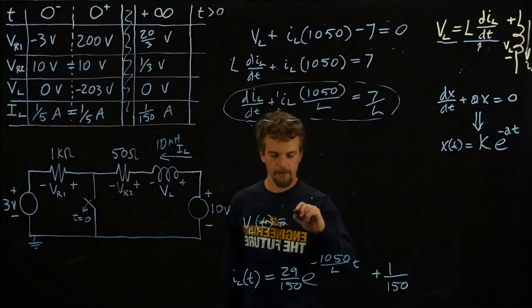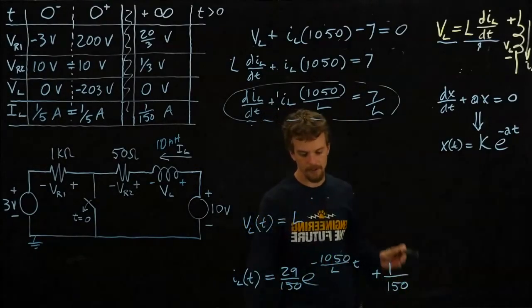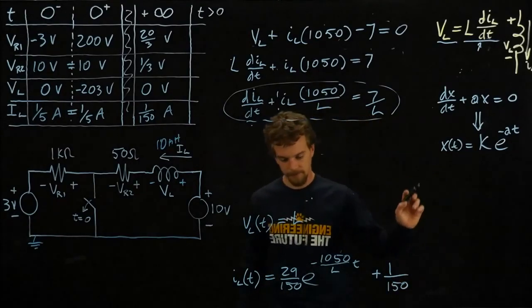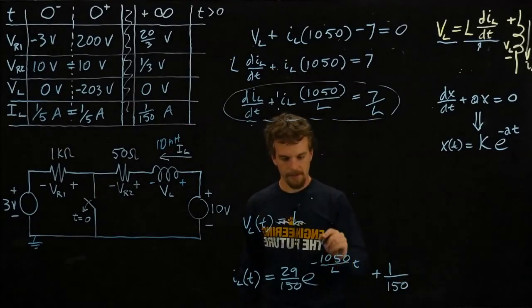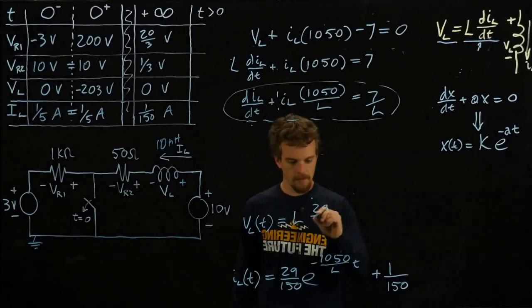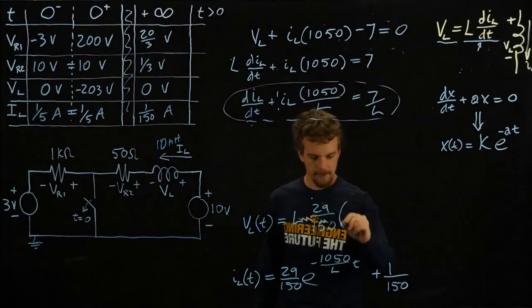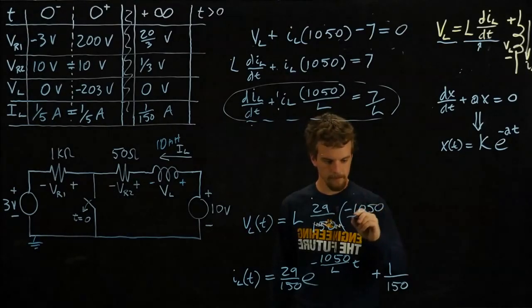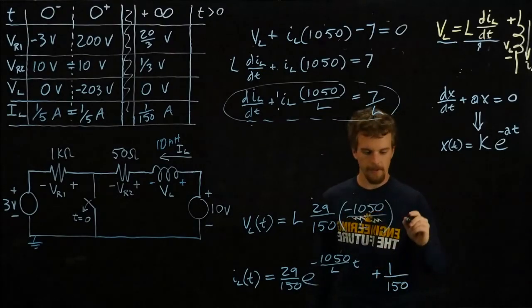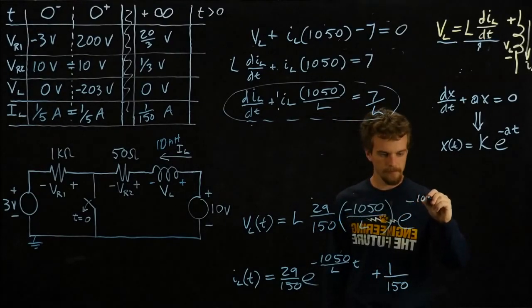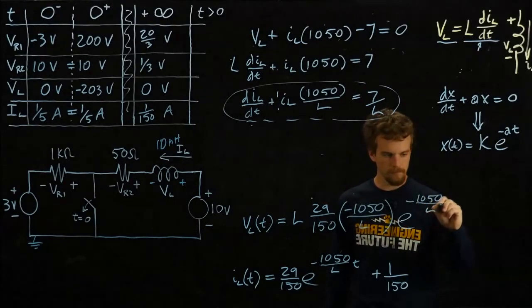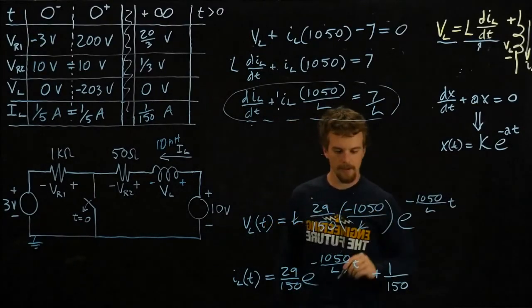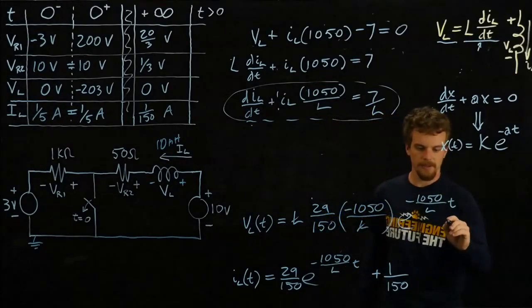So this is going to tell us that VL of t is equal to L times the derivative of this. Okay, so when we take the derivative of this, this term goes to zero because it's constant. And to take the derivative of this, we have the coefficient times this thing up here, negative 1050 over L, then times the term itself.